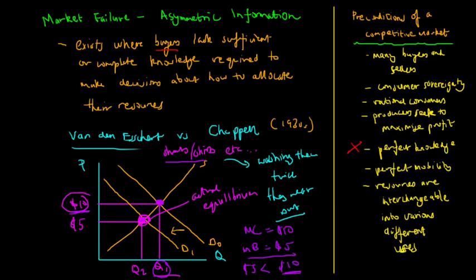This is why the market has failed to allocate resources efficiently. The actual equilibrium should have been at E1, whereas the market equilibrium now is at E0.